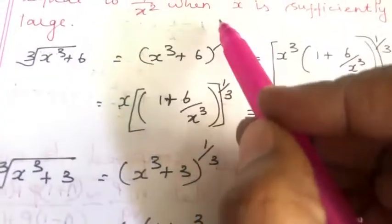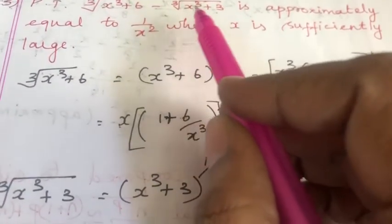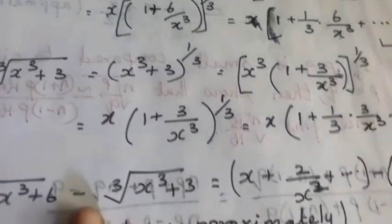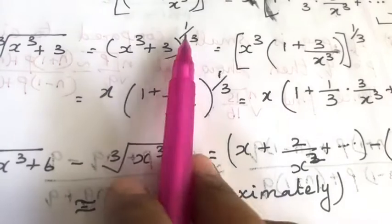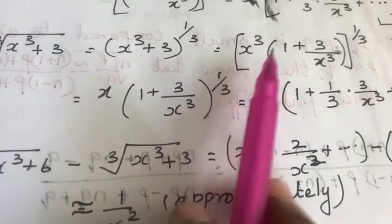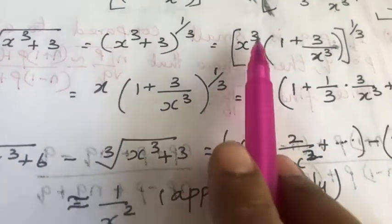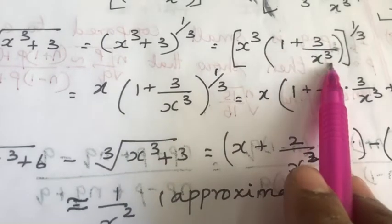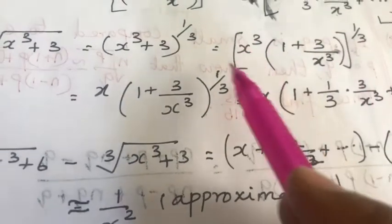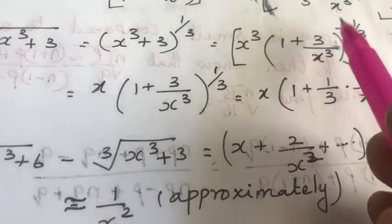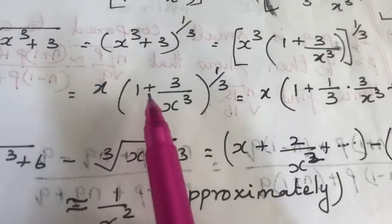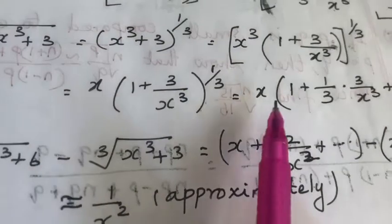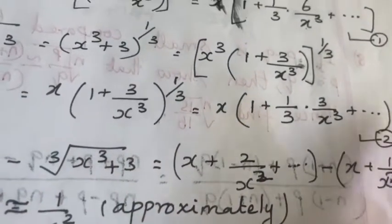Now let us take the second expression, that is ∛(x³ + 3), so (x³ + 3)^(1/3). Let us take x³ outside: x³ · (1 + 3/x³)^(1/3). x³ to the power 1/3 will become x, so this will become x · (1 + 3/x³)^(1/3). Now let us expand this.